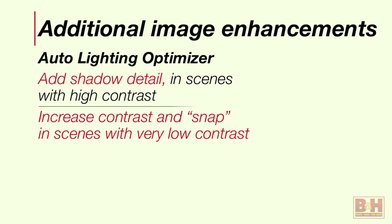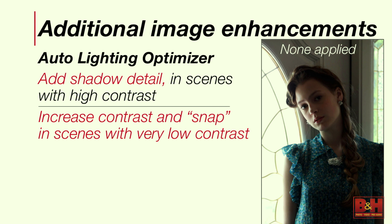Another one many people don't fully understand is Auto Lighting Optimizer, which really does two things. The primary thing it does is the opposite of Highlight Tone Priority — it adds detail to mid-tone and shadow areas when the system thinks they are underexposed. As a secondary feature, if you shoot in very flat lighting, it'll perform a tone curve adjustment and kick the contrast up slightly. Here's an example: with Auto Lighting Optimizer off, the shadows are getting pretty dark.